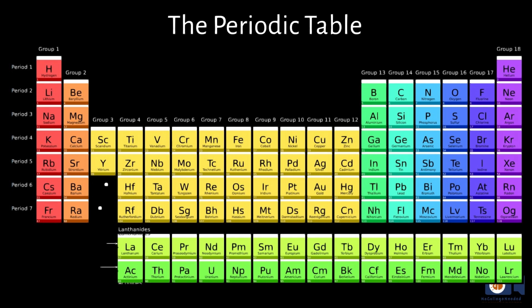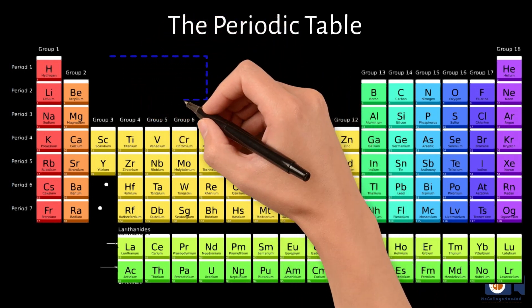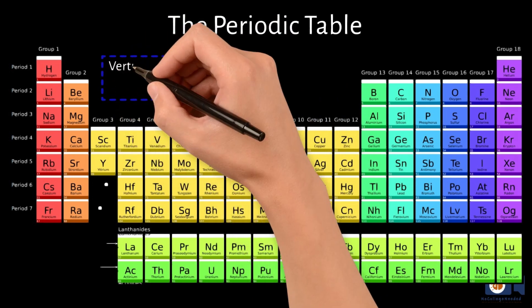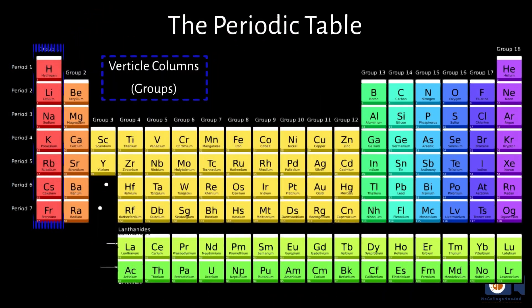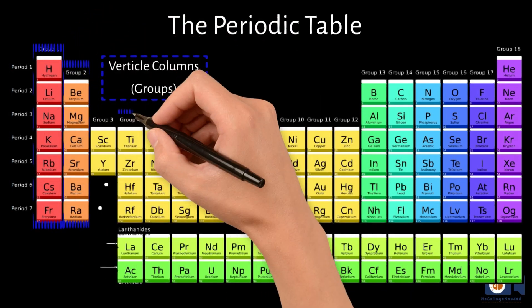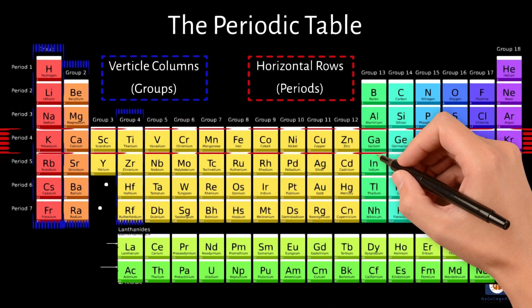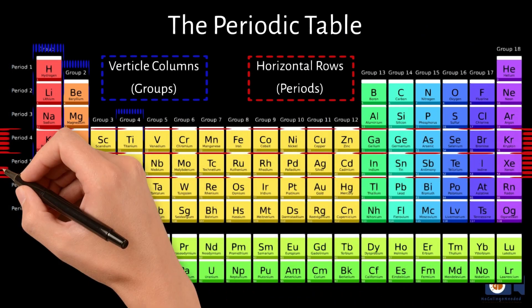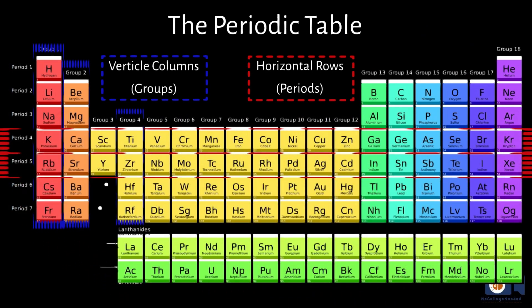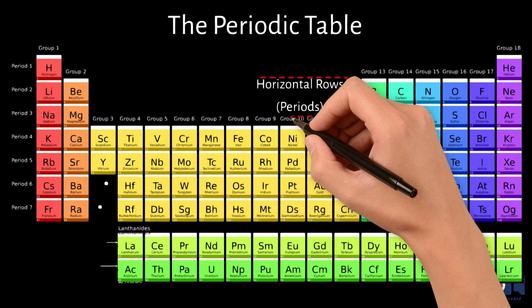The Periodic Table organizes elements into vertical columns called groups and horizontal rows called periods, based on their electron configuration and chemical properties, allowing scientists to make predictions about the properties of elements that have not yet been discovered.